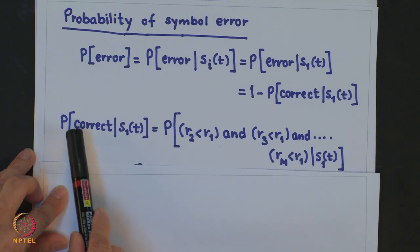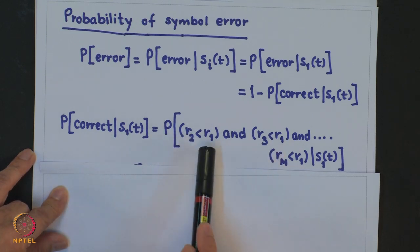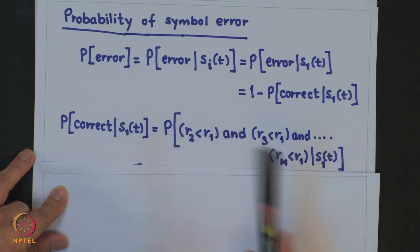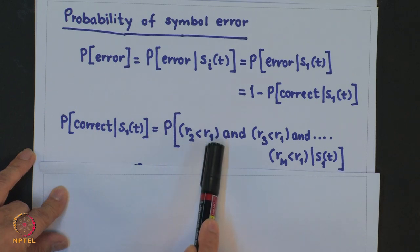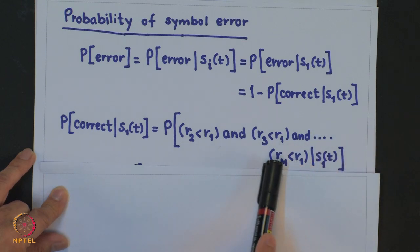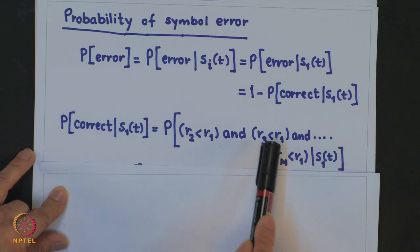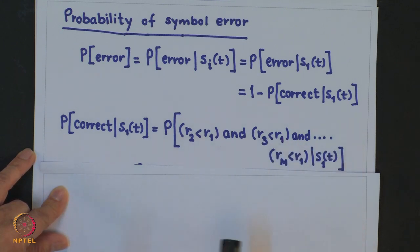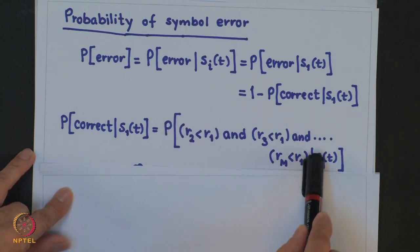The probability of correct detection given S_1(t) requires that R_1 is greater than all other R_j's — that is, R_2 < R_1, R_3 < R_1, and so on, R_j < R_1 for all j ≠ 1, up to R_m < R_1, given S_1(t). We must evaluate this probability.